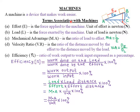There are some terms associated with machines. The first term is what we call the effort, denoted by capital E. Effort in physics is defined as the force applied to the machine. The SI unit for effort is simply the newton, because effort is just a force. We did say in Form 1 that the SI unit for any type of force will always be the newton.